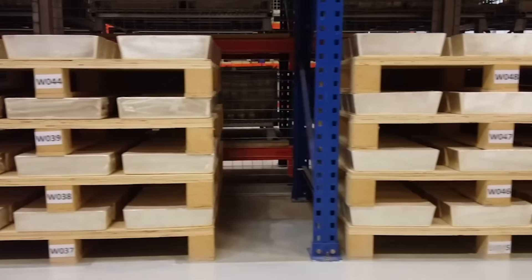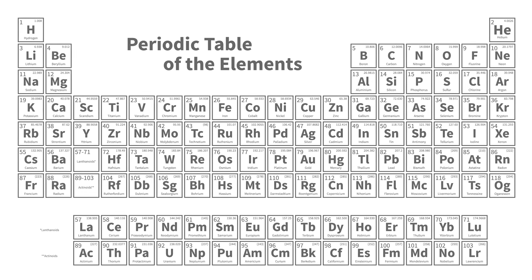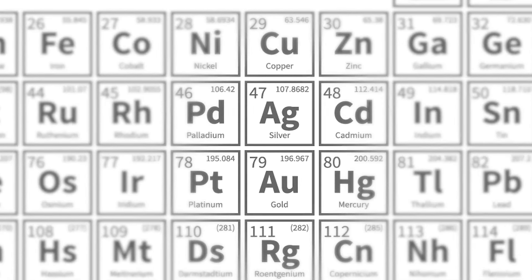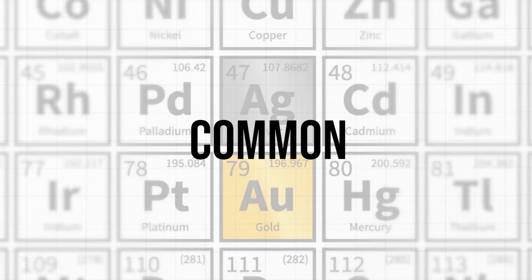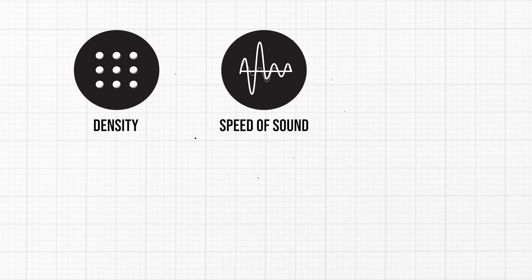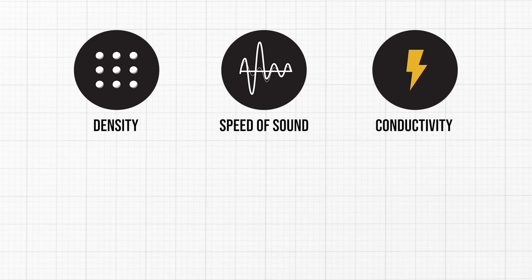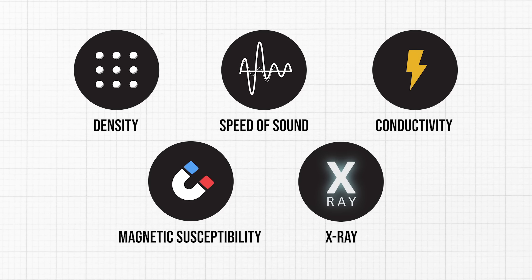Key to this knowledge is the understanding of material properties. Like every element on the periodic table, precious metals like gold and silver have a unique set of properties. The common properties used to test gold and silver are density, the speed of sound, conductivity, and magnetic susceptibility. In addition, x-ray spectrography is sometimes used for surface testing. Let us look at each material property and the associated tests for that property.